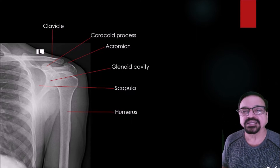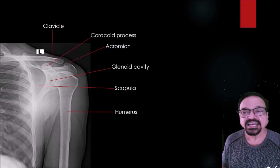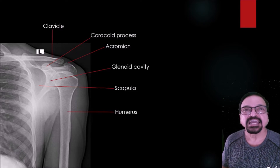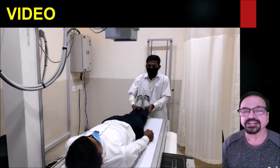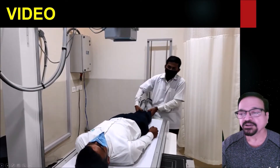A beautifully taken shoulder joint X-ray shows the clavicle, coracoid process, acromion process, glenoid cavity, scapula, and humerus. What is not well seen is the coracoid process, which projects in an oblique direction and is not well projected in this view. For that we will have to change the angulation and go for an axial view. We must consider what the indication is and which anatomical parts need to be seen in that X-ray, and design the radiography accordingly.